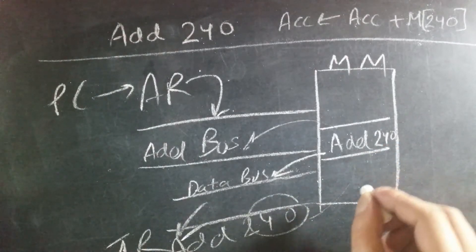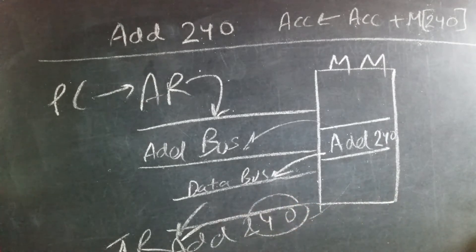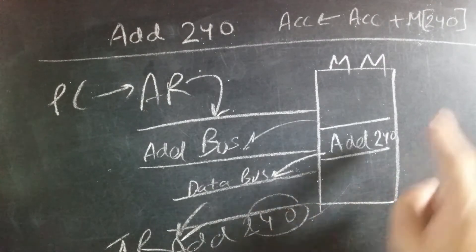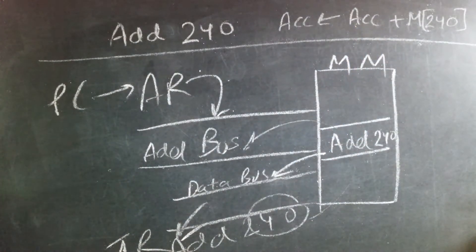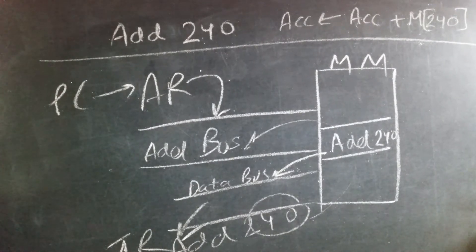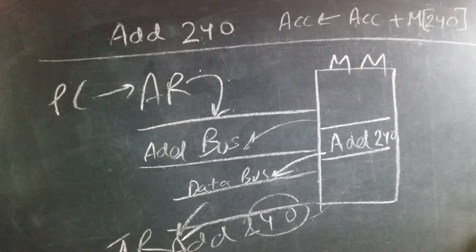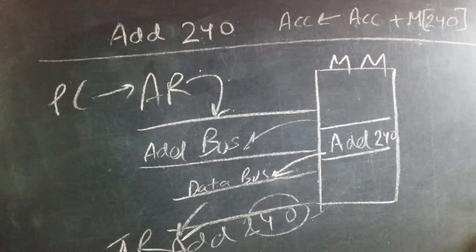Similarly, the address bus will go back to main memory, and in the 240th location it will see whatever data is there. From the 240th location, it will have some data which will be added with the accumulator. That data will be placed on the data bus, from there onto the data register, and from the data register it will add with accumulator.